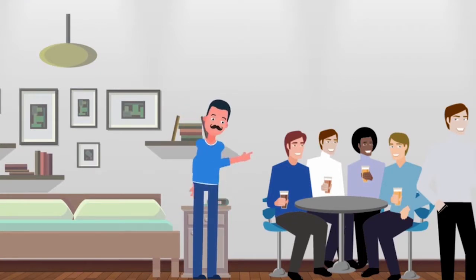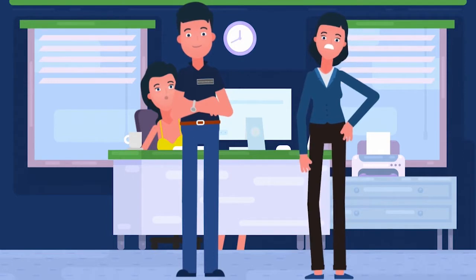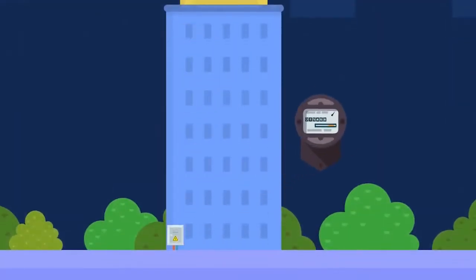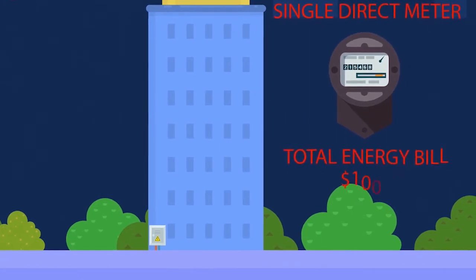It just isn't fair, Judy kept complaining to Lanny. But with all electricity coming through a single direct meter, Lanny had no way to know how much each tenant was using. All he could do was divide the building's total power bill equally amongst the tenants.